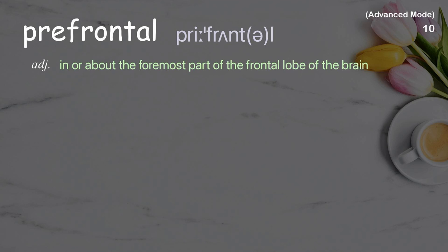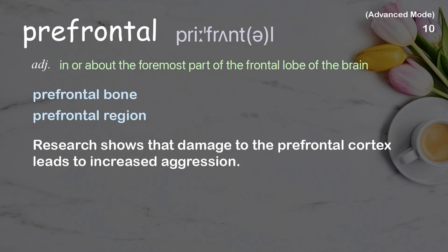Prefrontal. In or about the foremost part of the frontal lobe of the brain. Examples: Prefrontal bone. Prefrontal region. Research shows that damage to the prefrontal cortex leads to increased aggression.